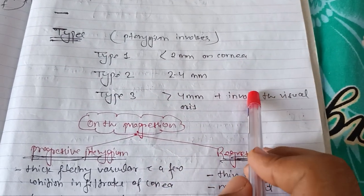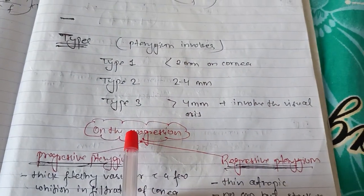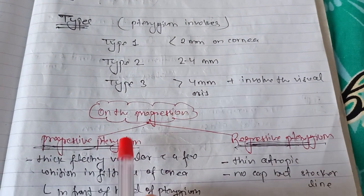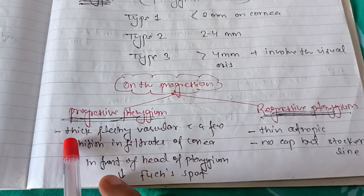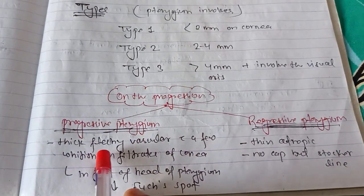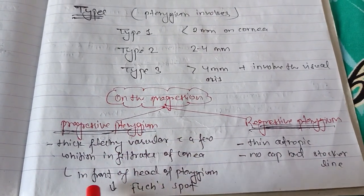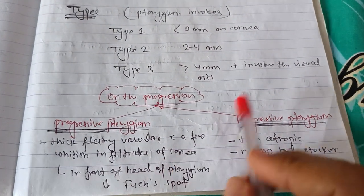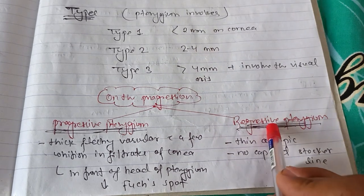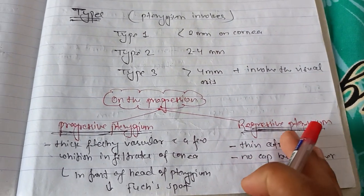On the basis of progression, it is two types: progressive pterygium and regressive pterygium. Progressive pterygium is thick, fleshy, vascular with a few whitish infiltrates of cornea in front of the head, which is called Fuchs' spot. Regressive pterygium is thin, atrophic, with no cap but Stocker line is present.